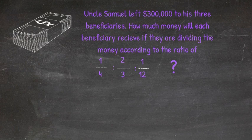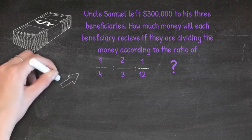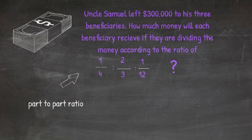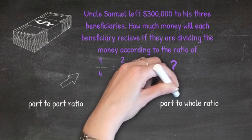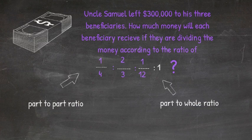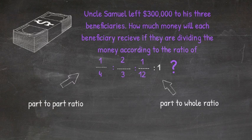Currently, this is a part-to-part ratio, like comparing the number of males to females in a class. But we can turn this into a part-to-whole ratio, which would be comparing the number of females to total students. In our case, we will be using the whole number of one to turn this into a part-to-whole ratio.